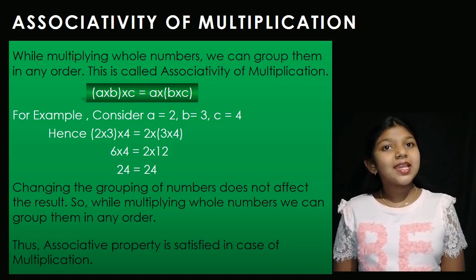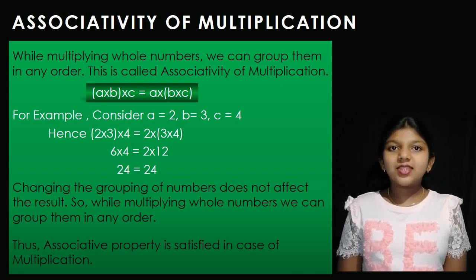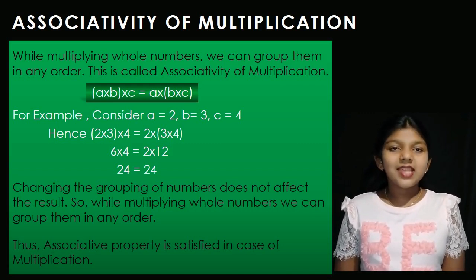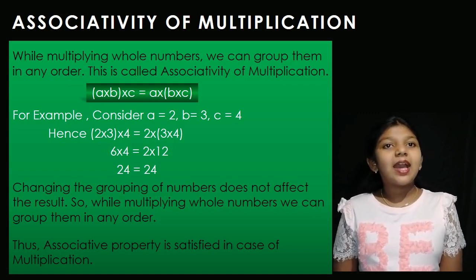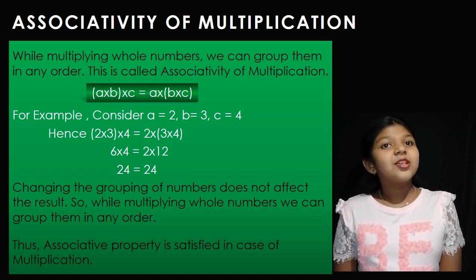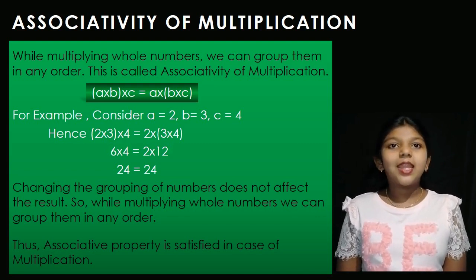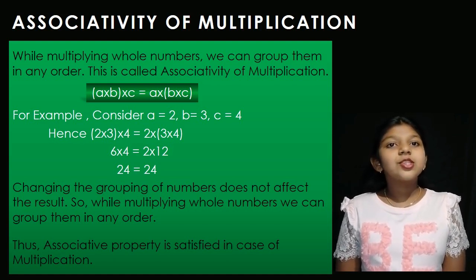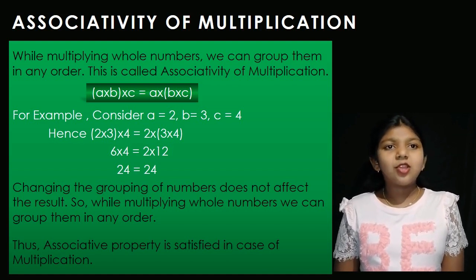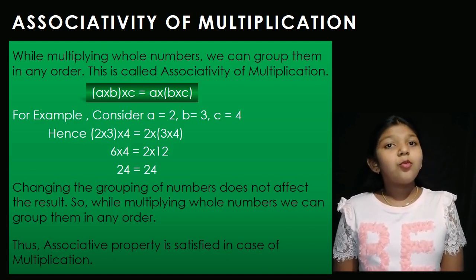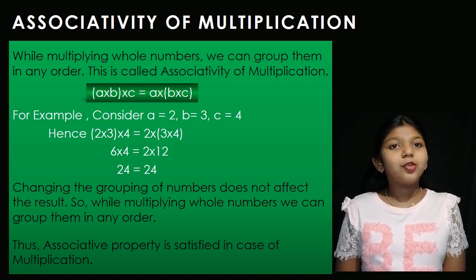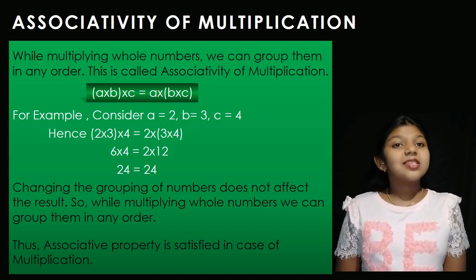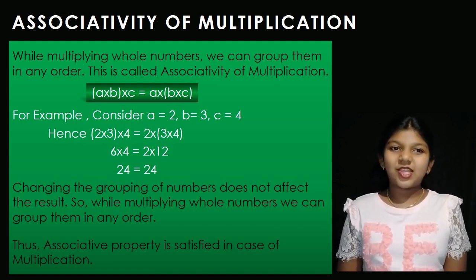For example, consider A is equal to 2, B is equal to 3 and C is equal to 4. On the left hand side, 2 and 3 are grouped and the product is multiplied by 4. So 6 into 4 is equal to 24. On the right hand side, 3 and 4 are grouped and the product is multiplied by 2. So 2 into 12 is equal to 24. Changing the grouping of numbers does not affect the result. So while multiplying whole numbers, we can group them in any order. Thus associative property is satisfied in case of multiplication.